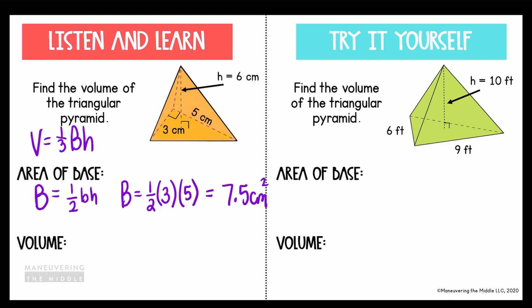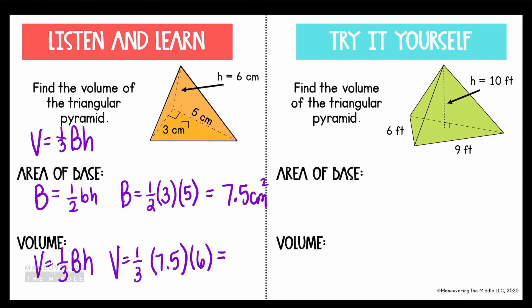Going back to my volume formula — V equals one-third area of the base times height — the area of the base is 7.5 and the height of the pyramid is 6. When I calculate that all out, I find that the volume is equal to 15 centimeters cubed.